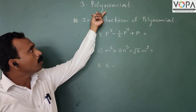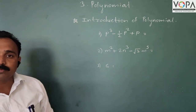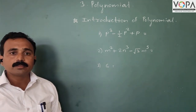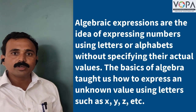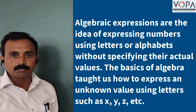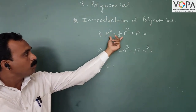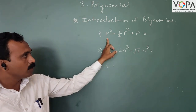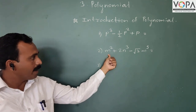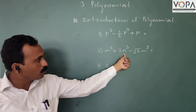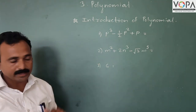Today we are taking the third topic of part 1: Polynomial. In the last chapter, we studied algebraic expressions. An algebraic expression is a combination of letters and numbers. For example: the first is p³ − (1/2)p² + p, the second is m² + 2m³ − √3·m⁵, and the third is 6.